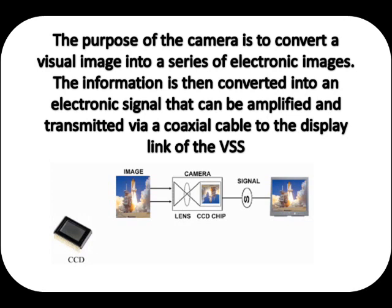The information is then converted into an electronic signal that can be amplified and transmitted via a coaxial cable to the display link of the VSS. A pixel, short for picture element, is the basic unit of a CCD chip that accumulates charge depending upon the amount of light falling upon it. A typical CCD chip has over 300,000 pixels. The pixels are so close together that they appear connected.